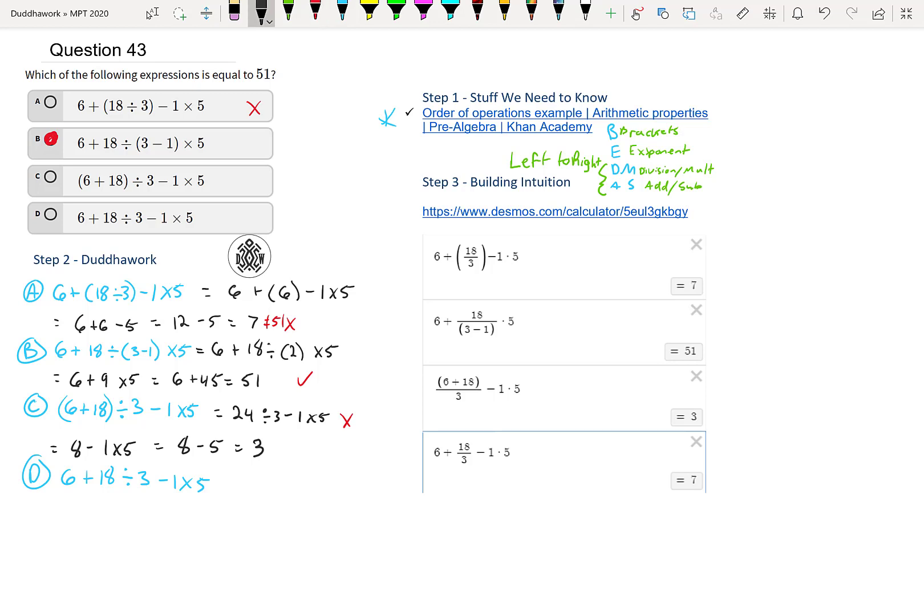Lastly, we move on to D. We don't have brackets, so we move on to exponents. We don't have exponents, we move on to division multiplication from left to right. So we do the 18 divided by 3 first. Here we have 6 plus 18 divided by 3 is 6, minus 1 times 5.